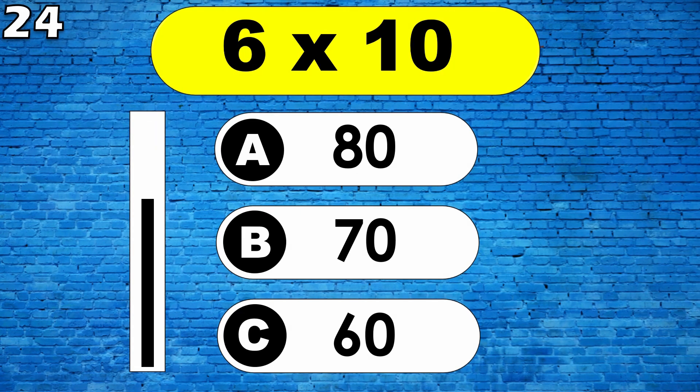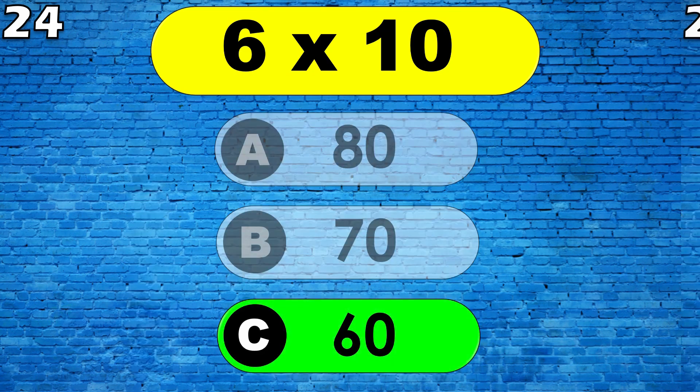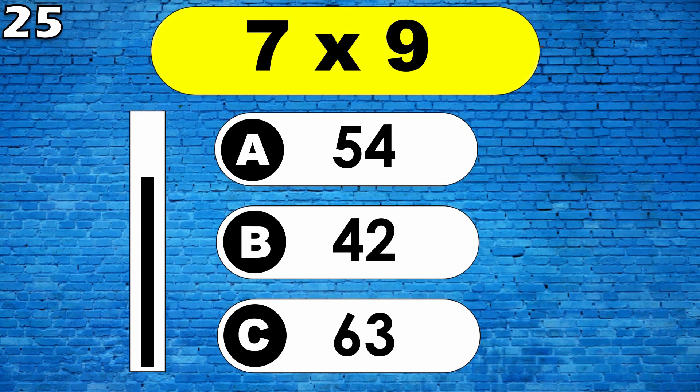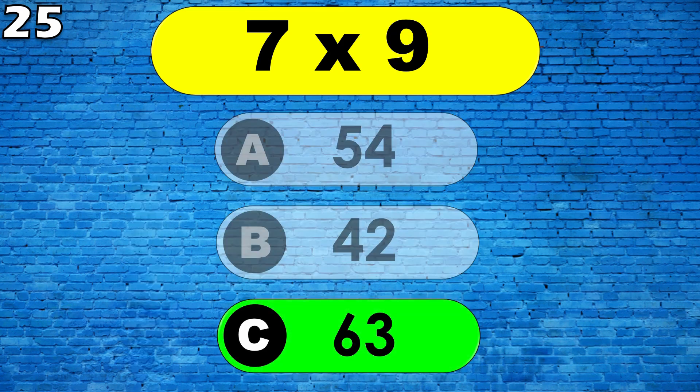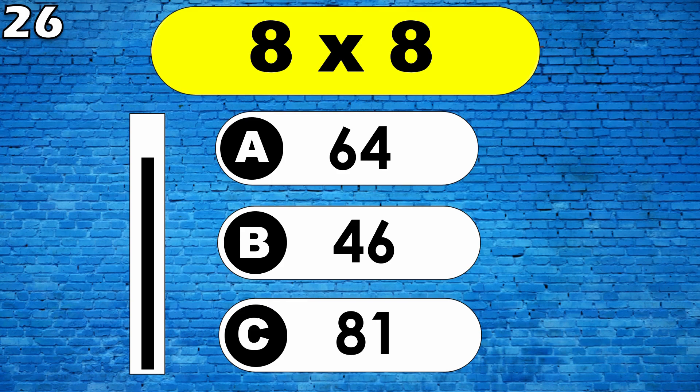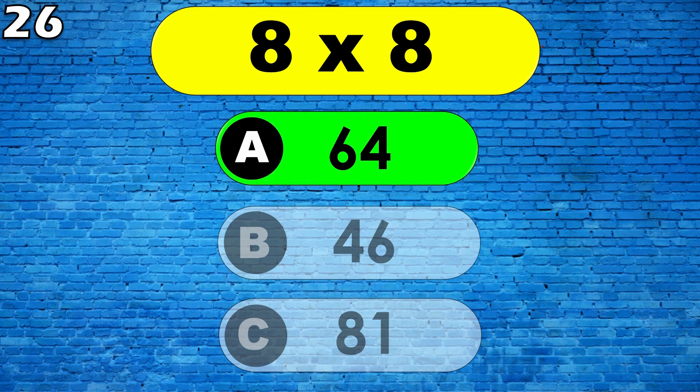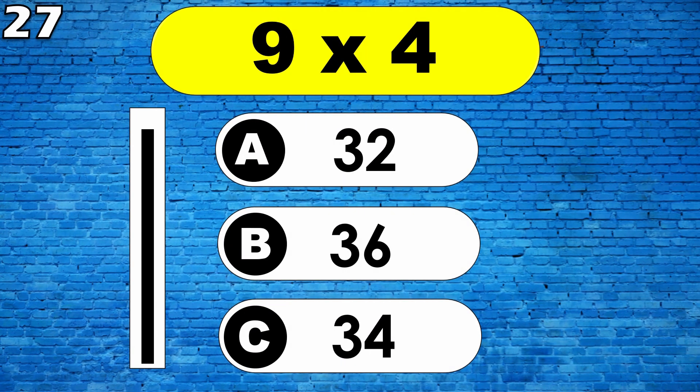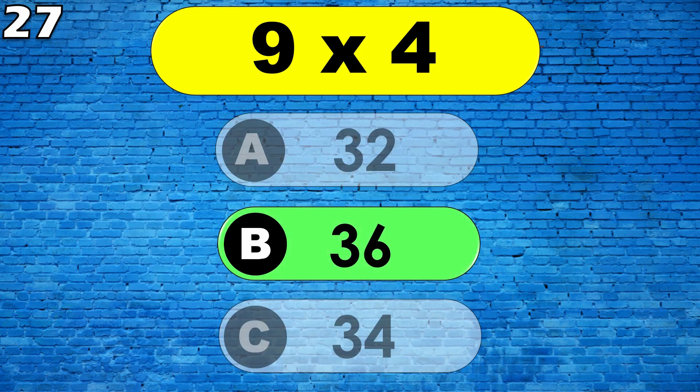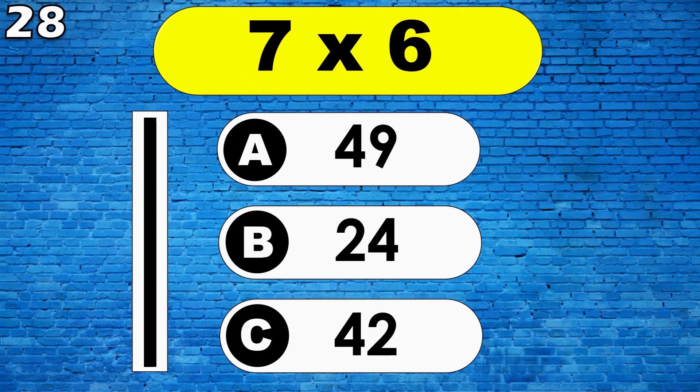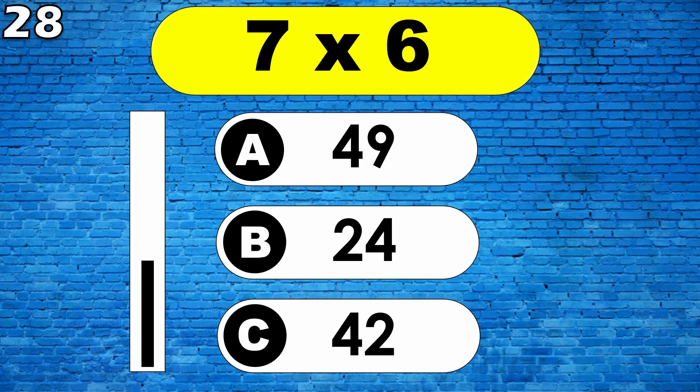Six tens are sixty. Seven nines are sixty-three. Eight eights are sixty-four. Nine fours are thirty-six. Seven sixes are forty-two.